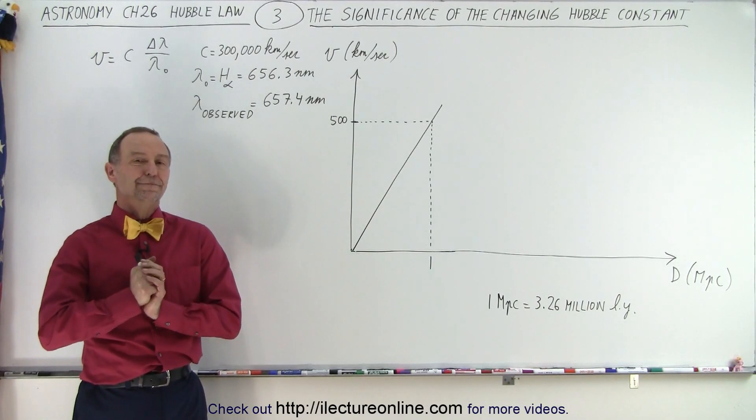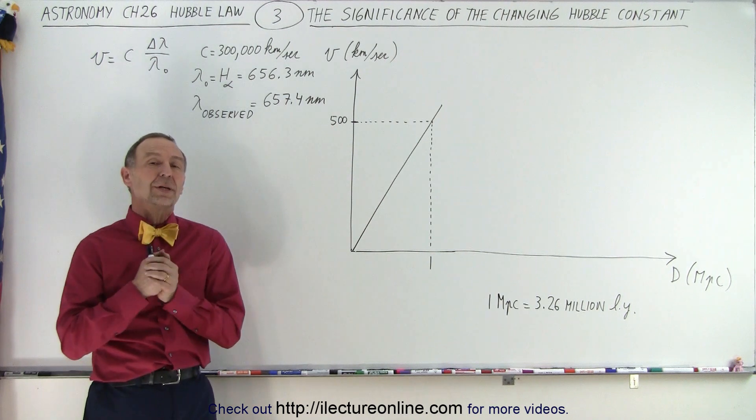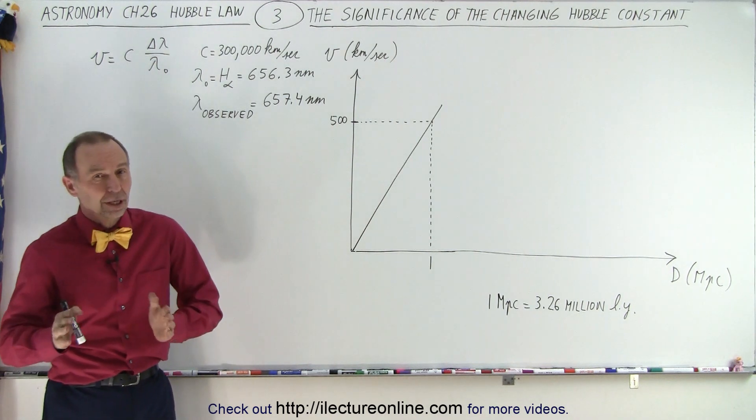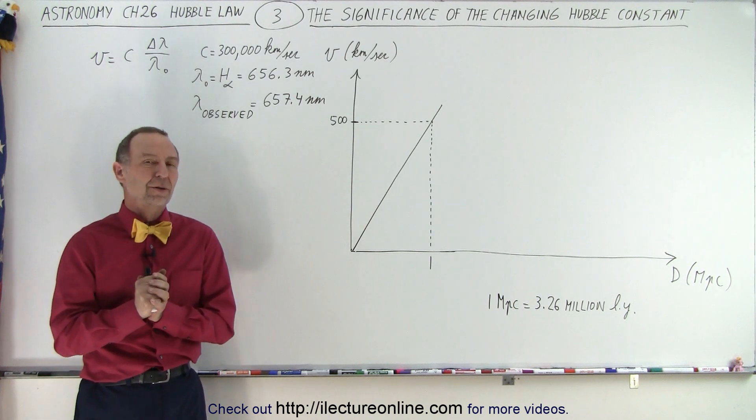Welcome to our lecture online. So what is the significance of the change in the Hubble constant? Remember that initially Hubble determined that it was about 500 kilometers per second per megaparsec.